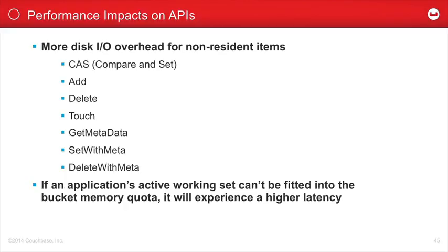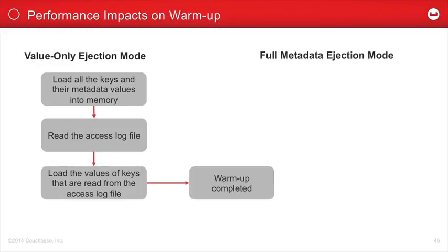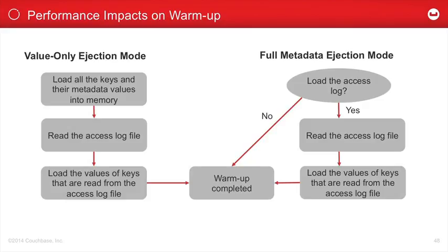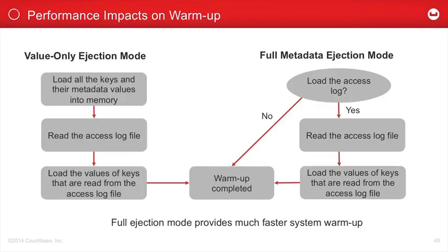There is also a performance impact on warmup. In value-only ejection mode, we must load all keys and metadata into memory, then read the access log file to restore the working set. In full metadata ejection mode, we check whether we need to load the access log. If not, warmup is immediately completed — we start with a cold cache. If we do need to load the access log, we read it to restore the working set. Full metadata ejection therefore has a much faster system warmup time than value-only ejection mode.